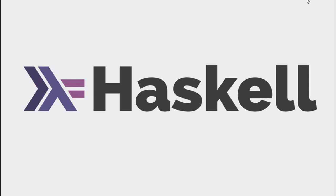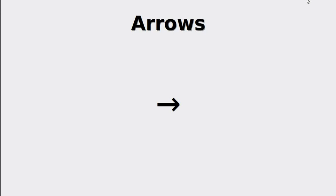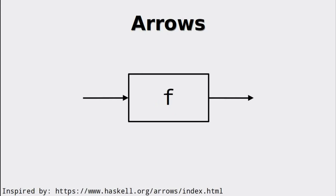In this video we are going to talk about arrows. In the last video we tackled category theory and structures such as functors, applicatives and monads that provided us with the theoretical frameworks for our code.